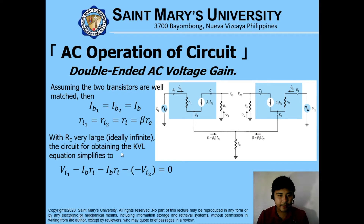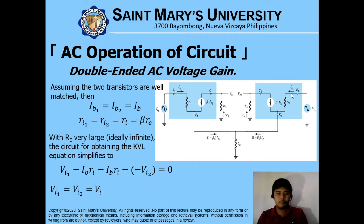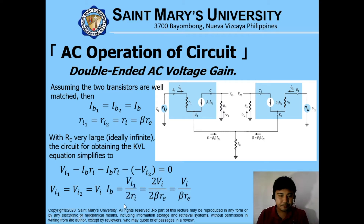We now simplify the KVL equation. VI1 and IB1, considering the voltage across this node, has a different phase compared to the other side, as we have learned in our past lesson. That will be equal to the negative of the different phase for this one, which in turn means IB is equivalent to twice VI — since they are equal but opposite in direction, different phases — so our IB is equivalent to VI over (beta times RE).